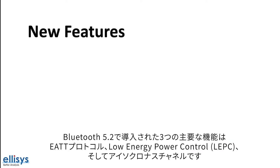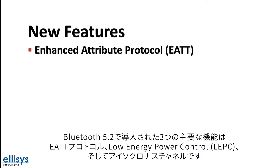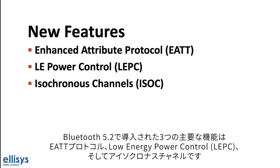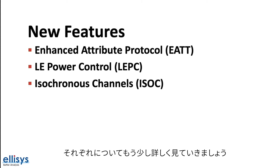The three major features introduced in Bluetooth 5.2 are the enhanced attribute protocol, LE power control or LEPC, and isochronous channels. Let's go over each of these in a bit more detail.